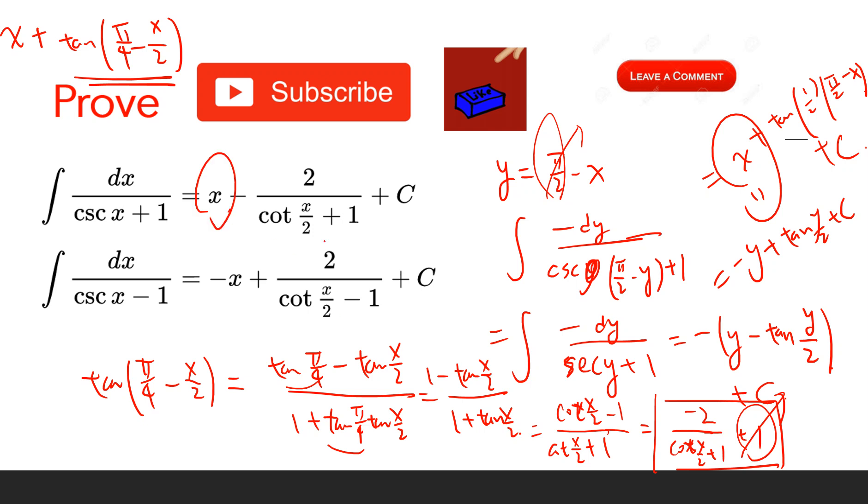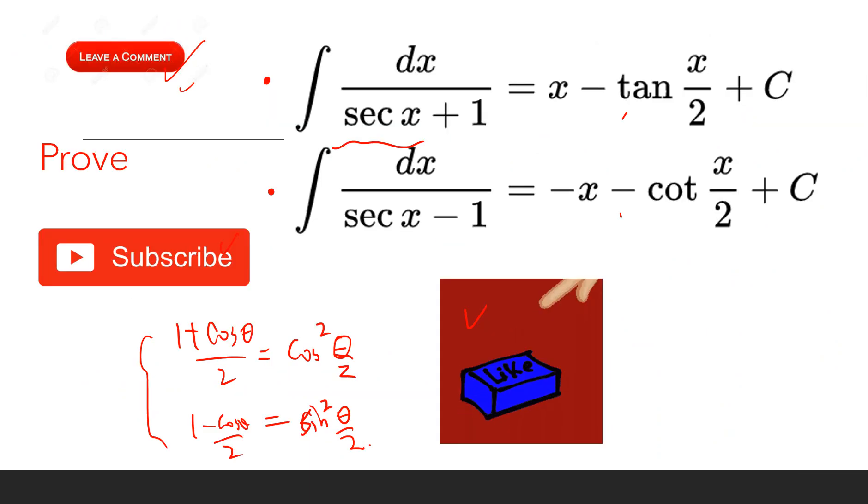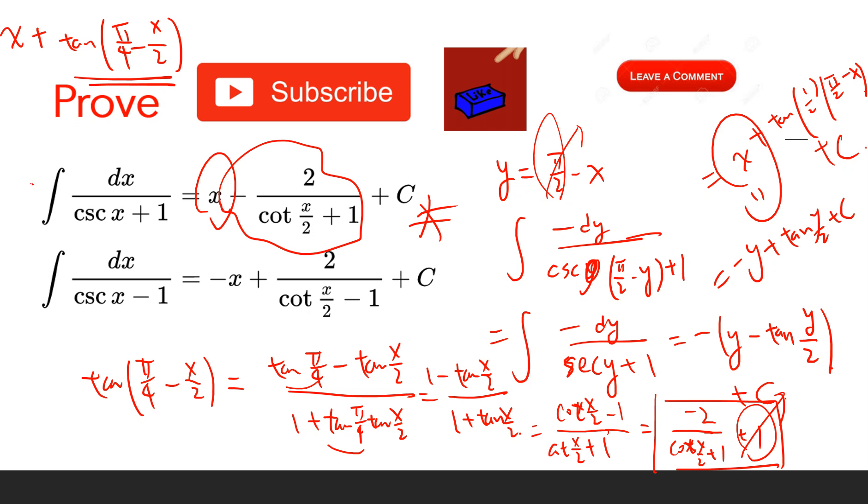So we get x minus this term, which is the correct answer. We just use a change of variable from the first one, then we can get the second one.